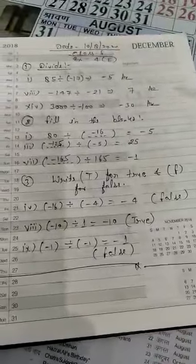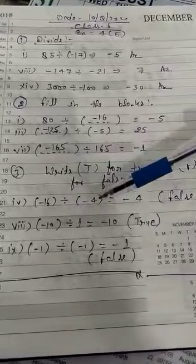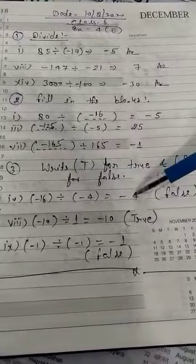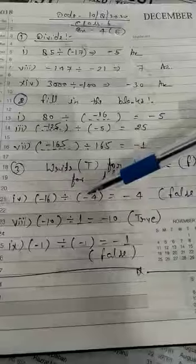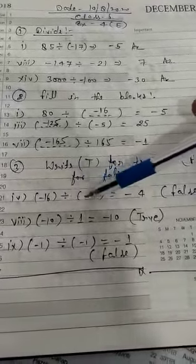Next question number 3, true or false hai. Batana hai ki the given statement is true or false. Yahan pe diya hai ki minus 16 ko agar minus 4 se divide karayenge to answer minus 4 aayega. 4 fours are 16, so 4 times 4 is 16.